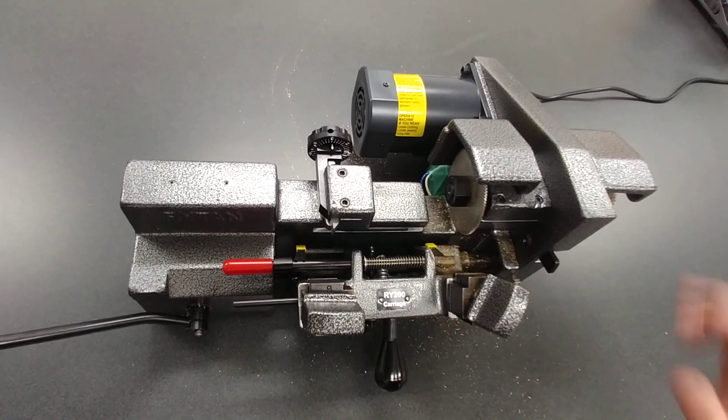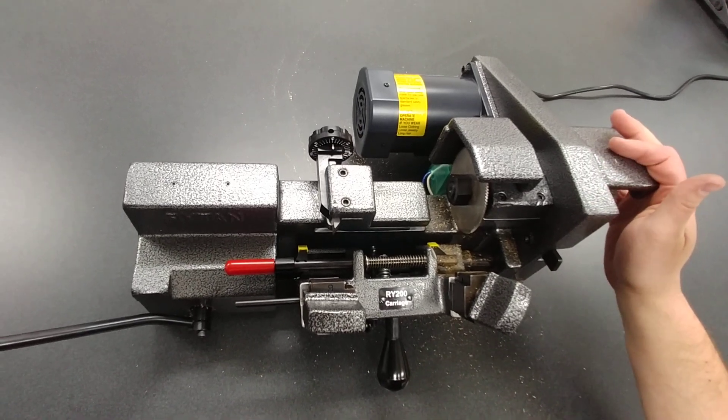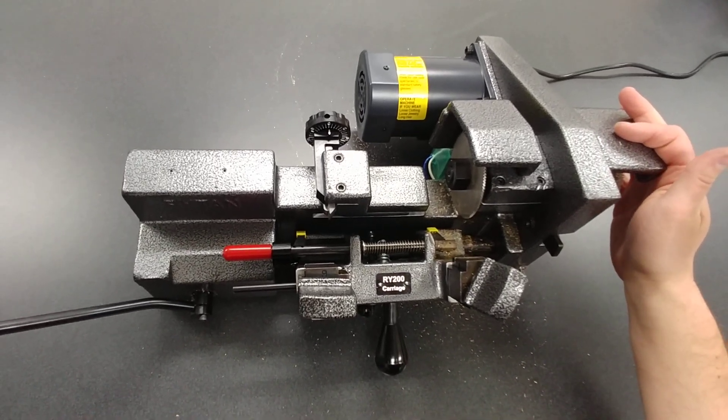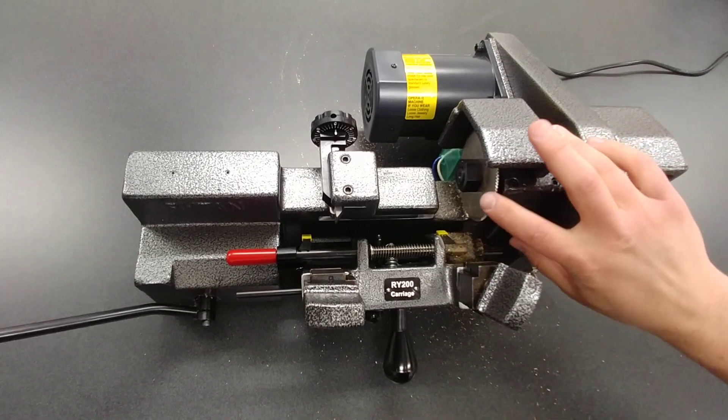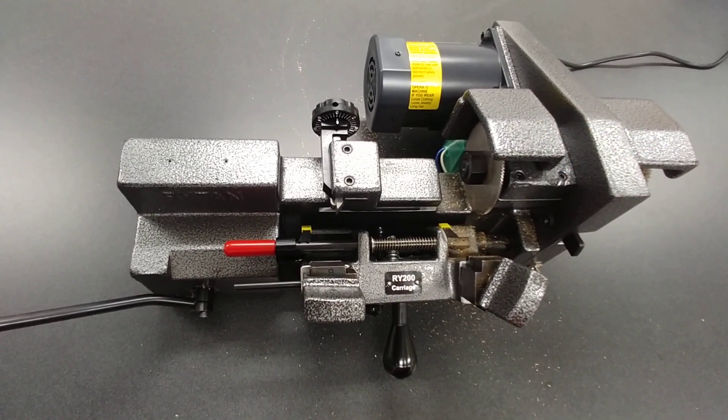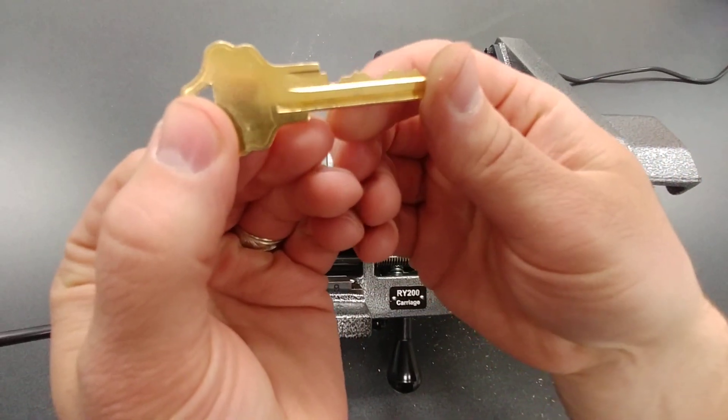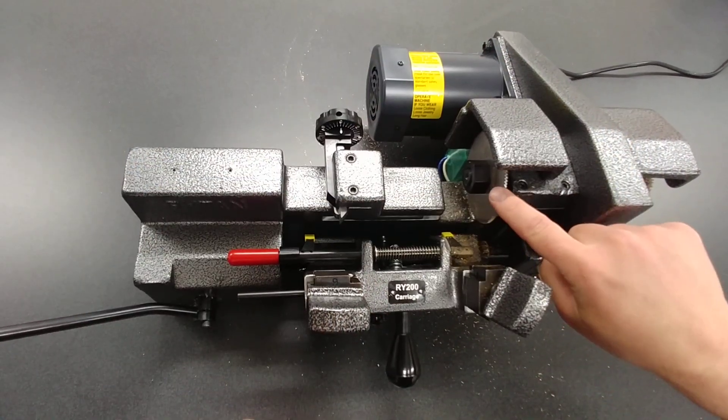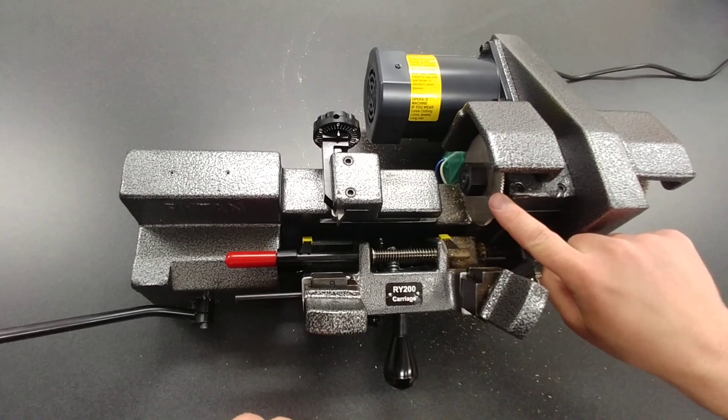The RY200 also comes with this deburring kit here on the side so you can deburr the keys after you duplicate them. It comes with a specialized jaw, so when you need to cut keys like a KW-10 that has that first flat cut in it, this type of cutter can accommodate that no problem.